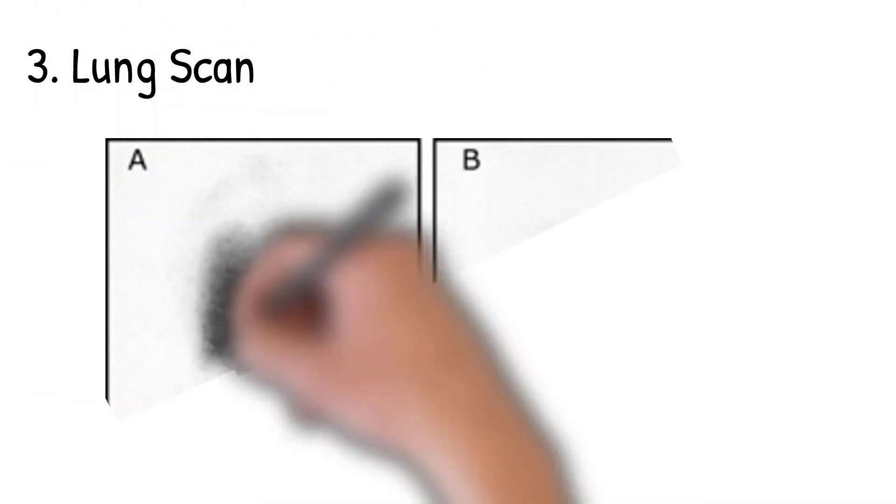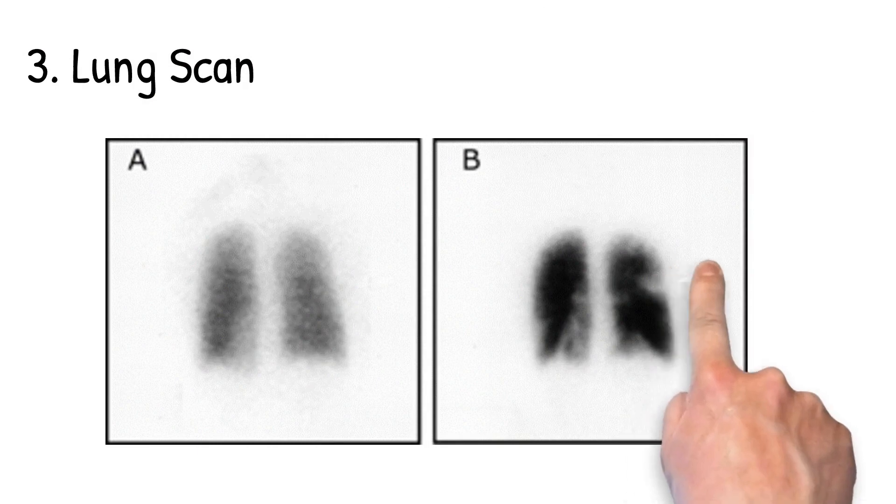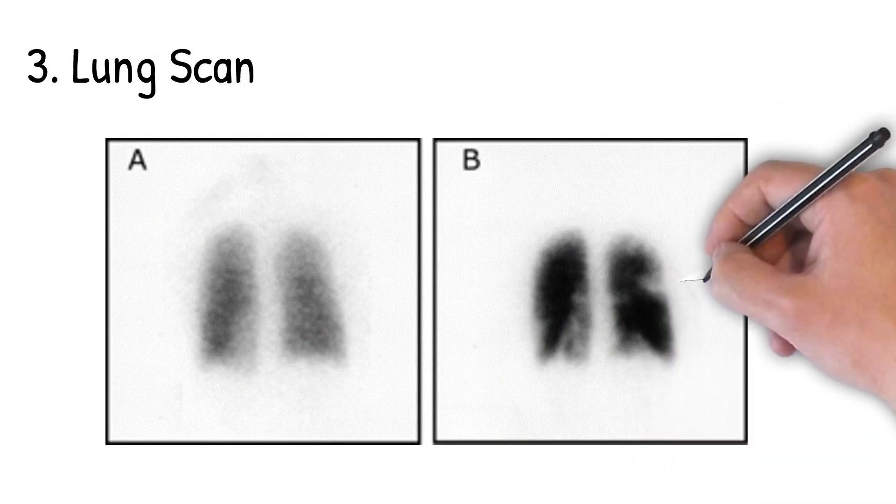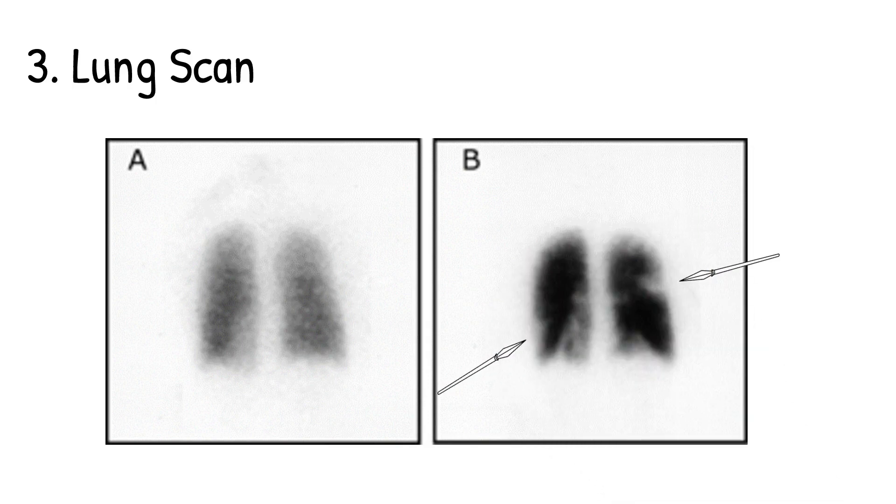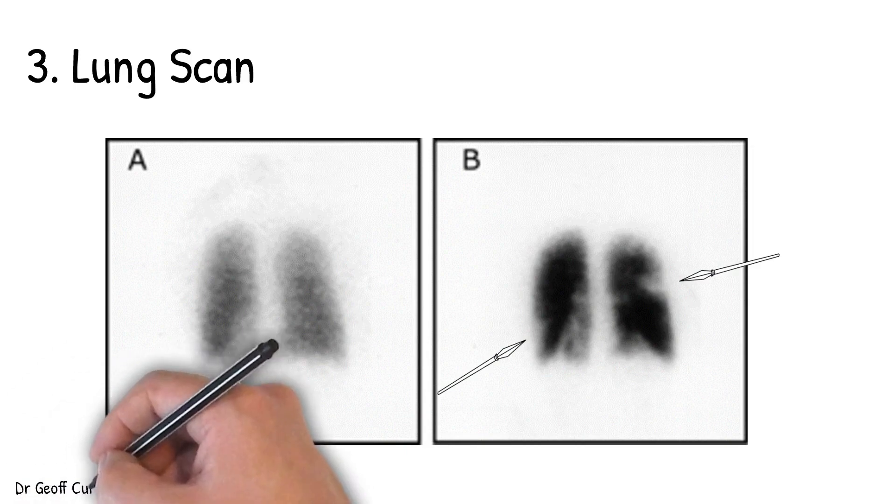One of the emergency procedures done in nuclear medicine is a lung scan looking for pulmonary embolism. On the right, you can actually see the arrows pointing to perfusion defects associated with blood clots in the lungs, where there's no abnormality on the ventilation on the left. This is associated with pulmonary embolism.